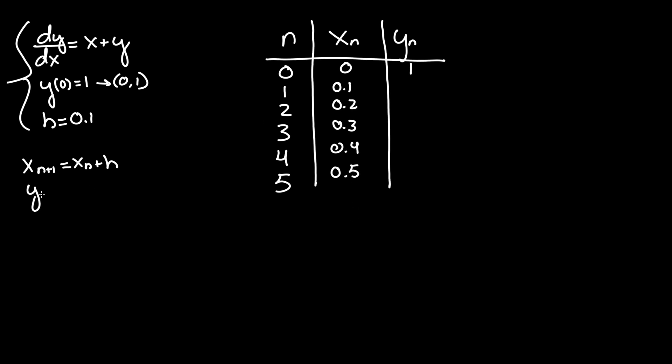For y, the formula is y_{n+1} = y_n + h·f'(x_n, y_n), or in other words, y_n plus h times the previous value of dy/dx.